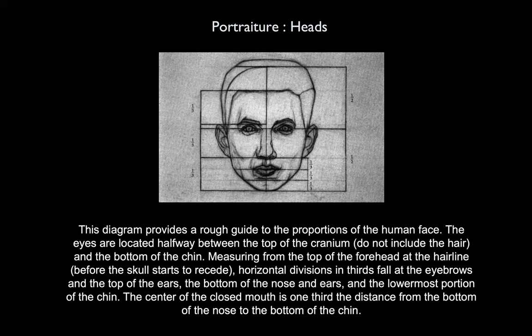We're going to take a look at portraiture and drawing heads. This diagram provides a rough guide to proportions of the human face. The eyes are located about halfway between the top of the cranium — not including the hair — and the bottom of the chin. Measuring from the top of the forehead at the hairline, horizontal divisions in thirds fall at the eyebrows and the top of the ears, the bottom of the nose and ears, and the lowermost portion of the chin. The center of the closed mouth is one third the distance from the bottom of the nose to the bottom of the chin. This diagram shows the half division and also these sectional third divisions.